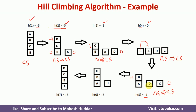With this as the current state, we apply another operator: we place block C on top of block B. Evaluating the new state: A and D have value 0; B's support structure A is correctly placed giving plus 1; C's support structures A and B are both correctly placed giving plus 2. The total heuristic value is plus 3, which is better than the current state value of plus 1, so this becomes the new current state.